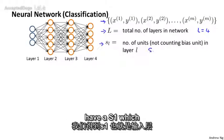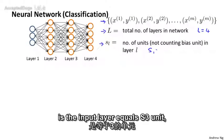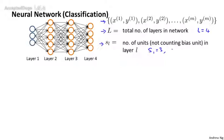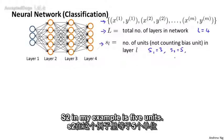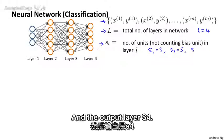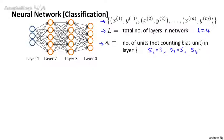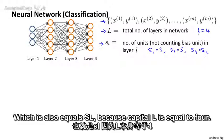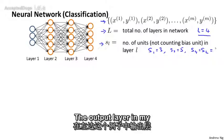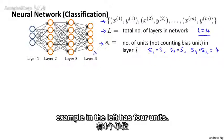For example, we would have S_1, which is the input layer, equals 3 units. S_2 in my example has 5 units, and the output layer S_4, which is also equal to S_L because capital L equals 4, the output layer in my example on the left has 4 units.